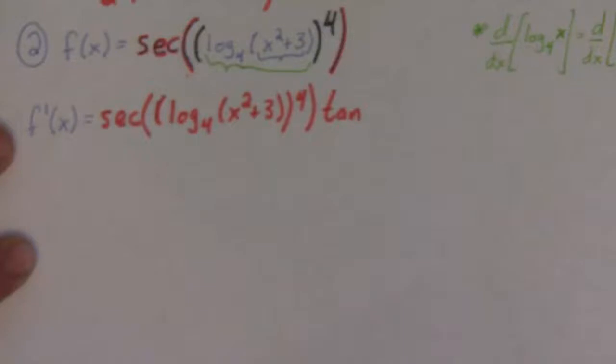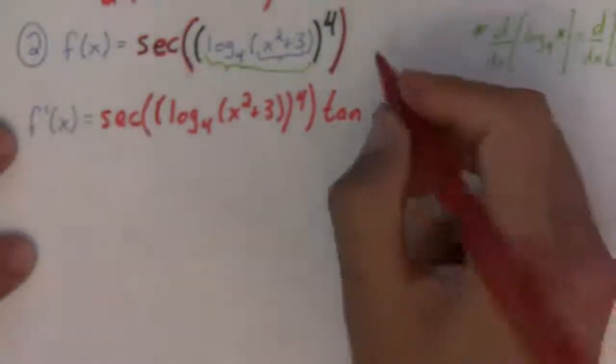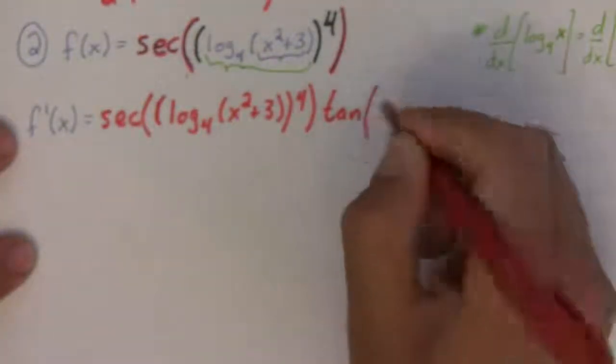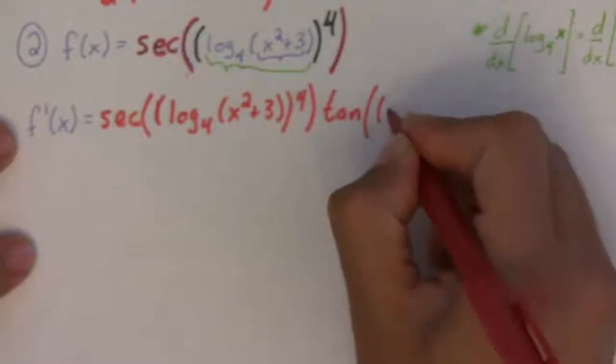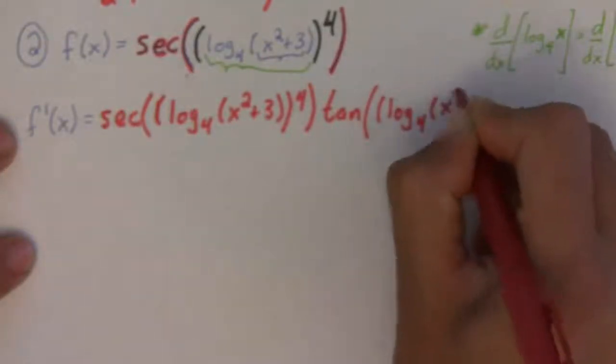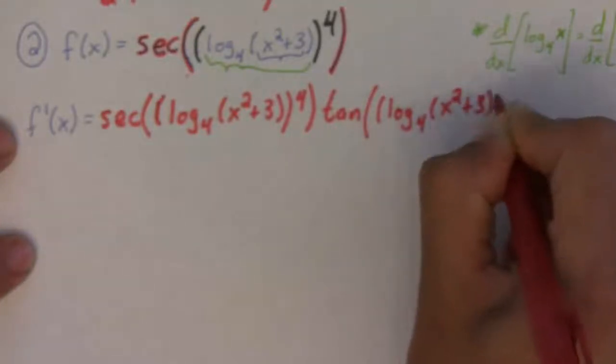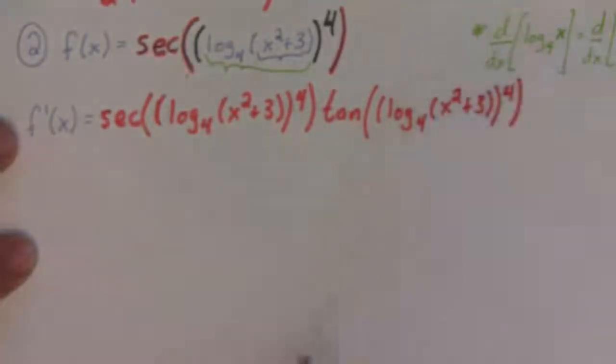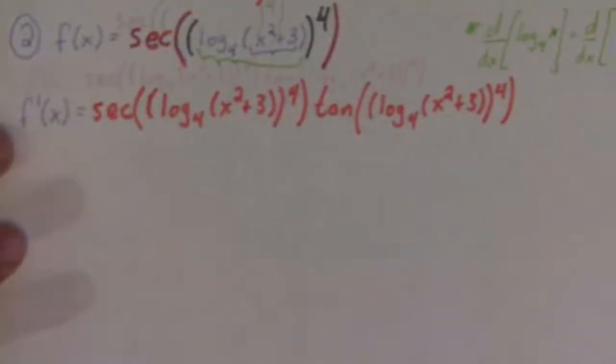So, we have secant of log base 4 of x squared plus 3 to the 4th times tangent of exactly the same thing. So, it's tangent of log base 4 of x squared plus 3 all to the 4th. Okay. That's just the derivative of the most outside function.